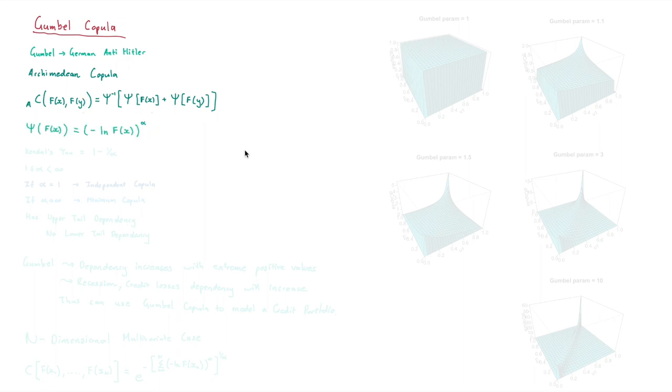Gumbel's generator function is given by the following: negative ln of x to the power of alpha, where Gumbel's tau is equal to 1 minus 1 divided by alpha. So, we're seeing that this alpha is the correlation parameter.